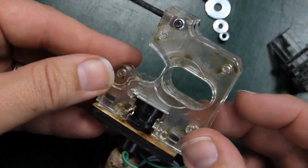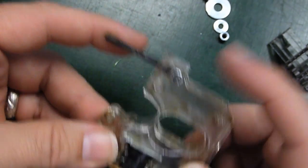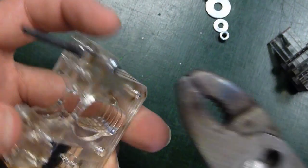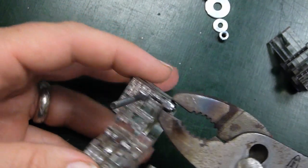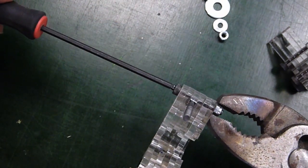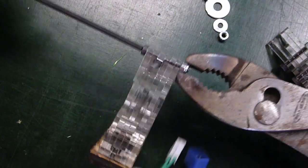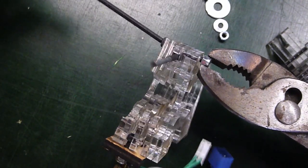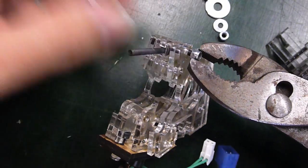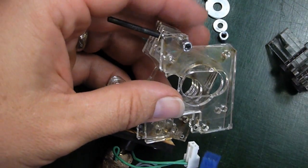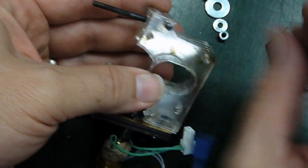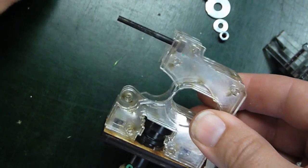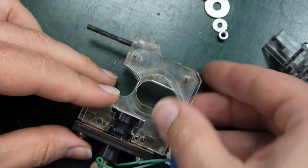And the only thing holding the pieces of acrylic together now is this bolt up at the top. And then once you take this out, the extruder is going to turn itself into a big jigsaw puzzle.